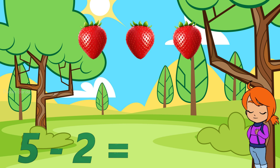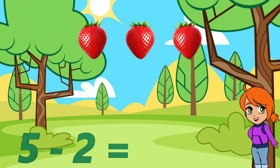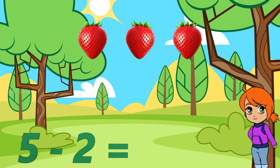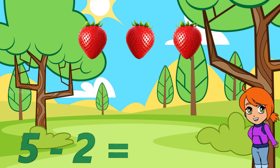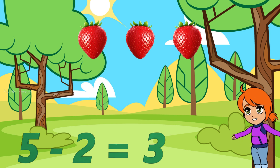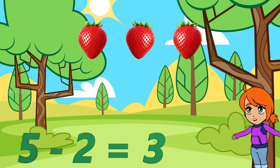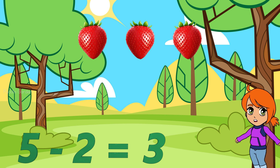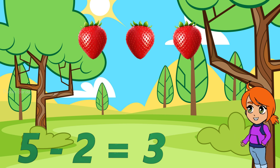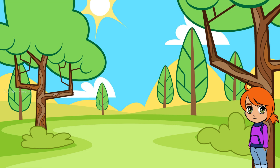5 take away 2 equals — I see 1, 2, and 3. So 5 take away 2, or 5 subtract 2, equals 3. Nice work.